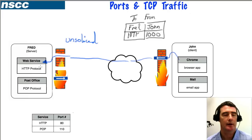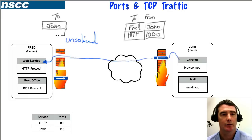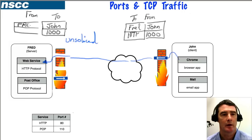Fred processes the request for a web page and generates a return packet. The 'to' field of that packet is addressed to John, since that's where the request came from, and it's directed to port 1000 — the application that made the request. It's coming from Fred on the HTTP port, and the rest of the packet contains the actual data: the web page, graphics, and related information.